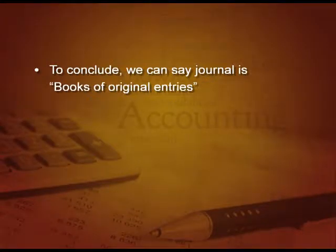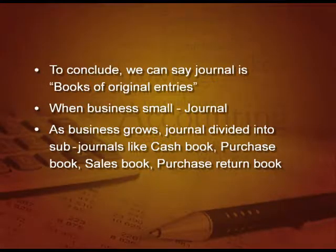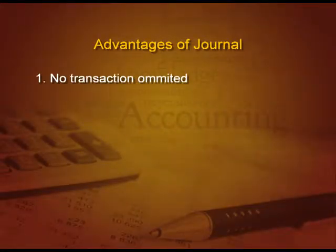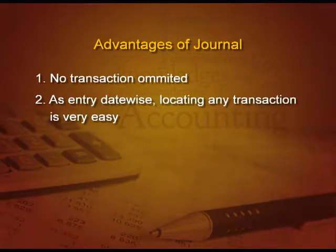To conclude, we can say journal is the book of original entries. When business is small, we make only a journal, but as the business grows in size, the journal has to be divided into sub-journals like cash book, purchase book, sale book, purchase return book, etc. Now, what are the advantages of journal? First, no transaction is omitted as everything is recorded, so there is no point of omission.